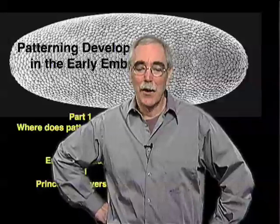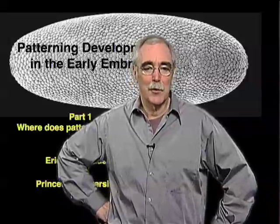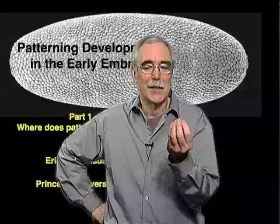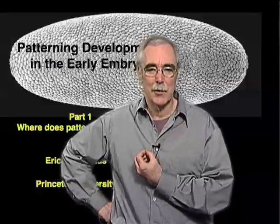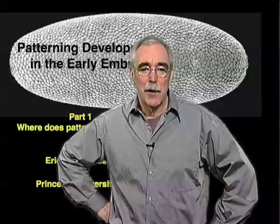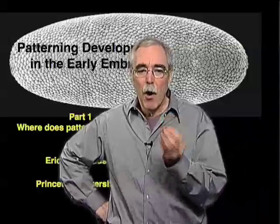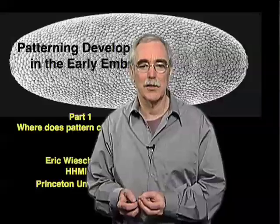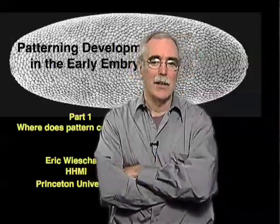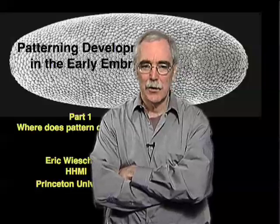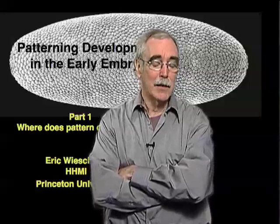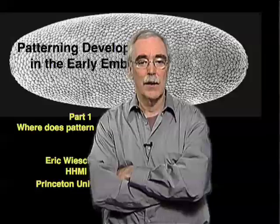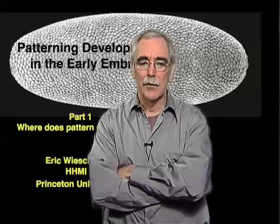These processes are interesting to all of us, especially with respect to human development, because we're all interested in where it is that we come from — how is it that a single cell is able to give rise to something as complex as you or I? But over the past 20 years, we've also learned that all these processes that occur in embryonic development, all the gene activities and all the cell shape changes and the controls of cell adhesion and the cytoskeleton cell structure, are the same kinds of processes that operate throughout the life of almost all organisms.